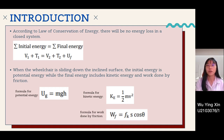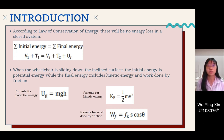Now let's move on to the Law of Conservation of Energy. According to this law, there will be no energy loss in a closed system, so the summation of initial energy equals the summation of final energy. When the wheelchair is sliding down the incline surface, the initial energy is potential energy and the final energy includes kinetic energy and work done by friction. The formulas to calculate these are shown in the slide.